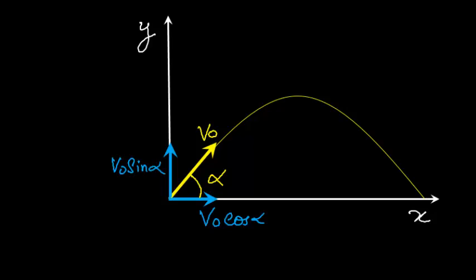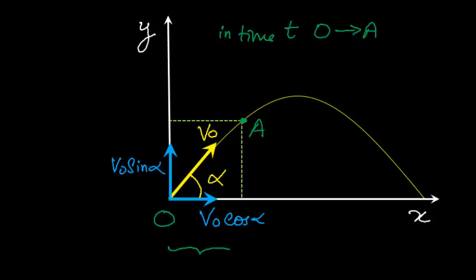And let's say that this point, I will call it as O. And after some time T, it reaches some random point over here. I will call it as A. So in time T, the projectile goes from O to A, such that its X direction displacement is X, and its Y direction displacement is Y.